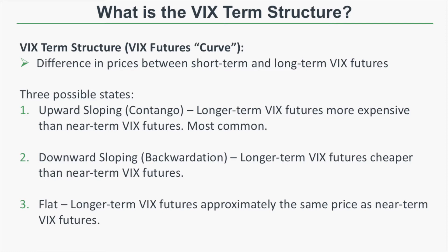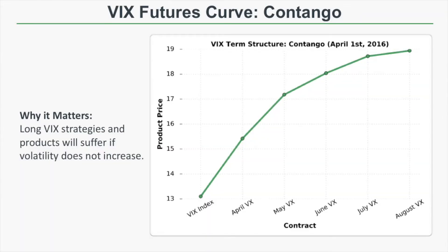Here we're visualizing what contango looks like. This graph was taken on April 1st, 2016, and it shows the VIX index and the five subsequent VIX futures contracts. The VIX index was really low, right around 13. The April VIX future was between 15 and 16, May was just over 17, and all the way out to August the VIX future was at 19. So the VIX index was at 13 and by August the VIX futures increased to around 19 — this is an upward sloping, or contango, VIX term structure.